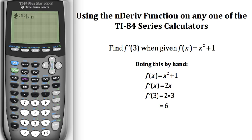That's where your function goes: x² + 1. Then when you're done there, you need to arrow over. Right here it says x equals, and I need to enter the value at which I want the derivative.